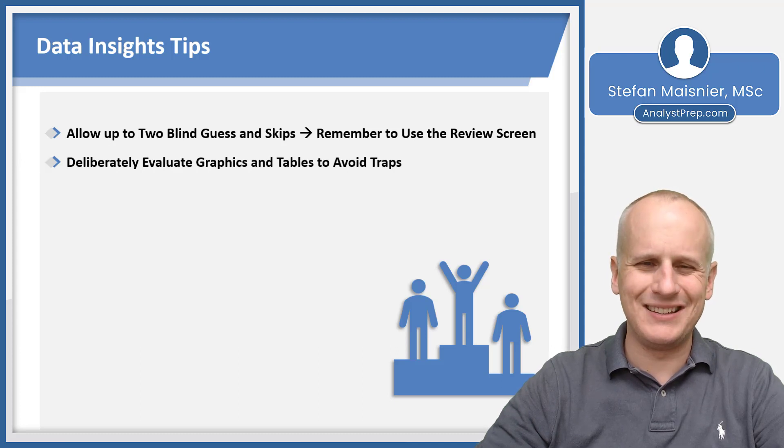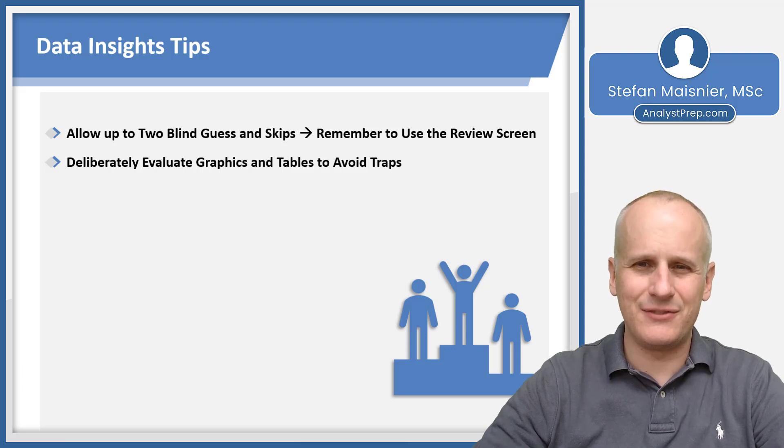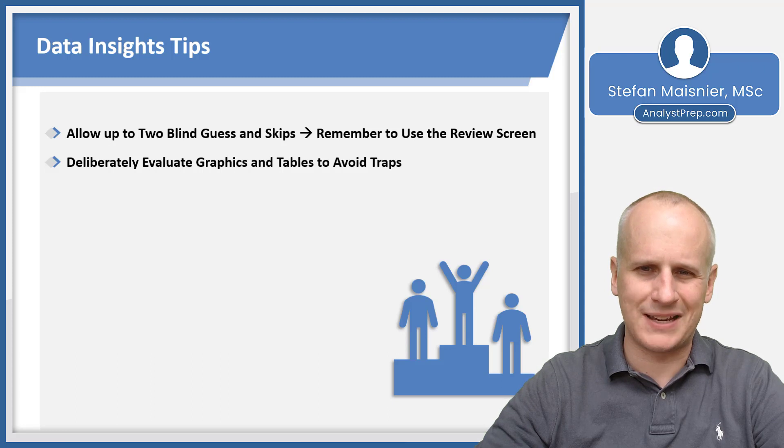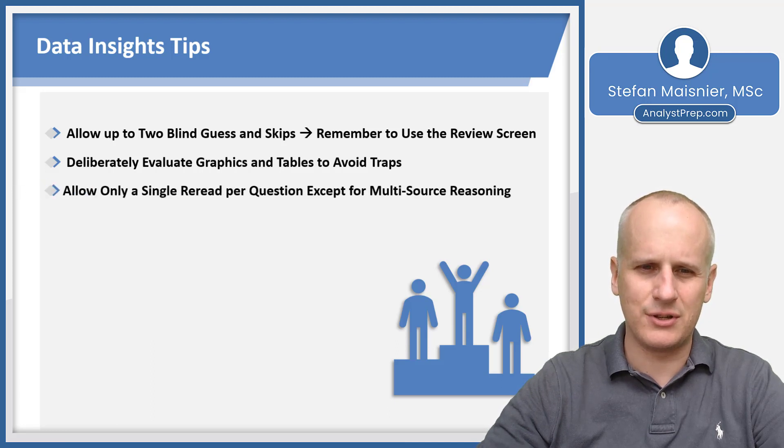And that includes deliberately evaluating the graphics and tables on your first pass through them before even engaging the question tasks to avoid what I believe are relatively simple traps. They love to use what I tend to categorize as cheap tricks for the graphics and table interpretation, giving you the wrong answer that is going to happen because you evaluated the wrong axis or confusing percent increase versus percent decrease. They have tons of cheap tricks here, so just be deliberate on the upfront evaluation and execution there.